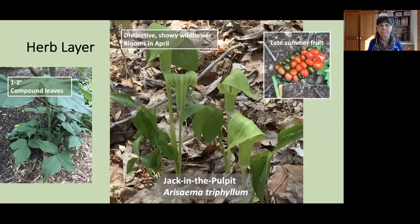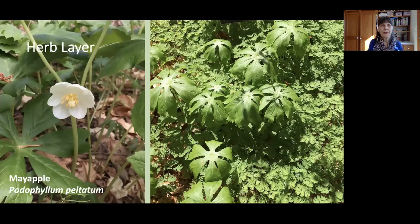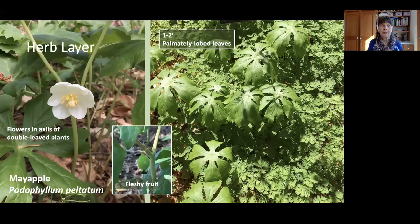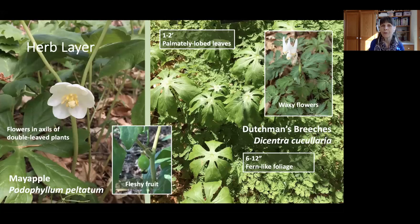Also in the herb layer are May Apple, Podophyllum peltatum, reaching one to two feet with palmately-lobed umbrella-form leaves. Under those umbrellas, in the axils of double-leaved plants, you'll see white nodding flowers. When pollinated, those form a lemon-shaped, fleshy fruit particularly appealing to local box turtles. The other plant pictured, with fern-like foliage, is Dutchman's Breeches, Dicentra cucullaria. It has waxy flowers that resemble pantaloons. Both of these plants will send up their foliage, flower, and then go dormant for the summer — they're referred to as ephemeral plants.